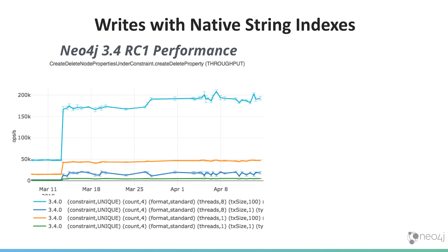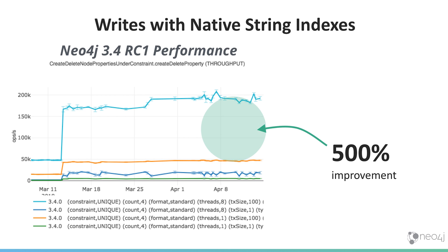This is the first release candidate, and is actually showing you the write performance when writing strings. You can see here, looking at March of this year, at the point at which we implemented the new native string index, we have approximately a 500% improvement in overall performance.